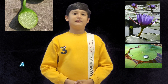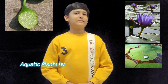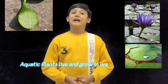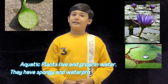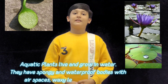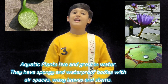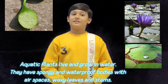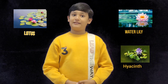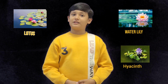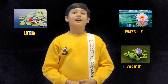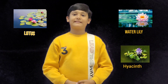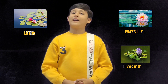The next type of plant is the aquatic plant. Aquatic plants live and grow in water. They have spongy and waterproof bodies with air spaces in their leaves and stems. Water lily, lotus and water hyacinth are some examples of aquatic plants.